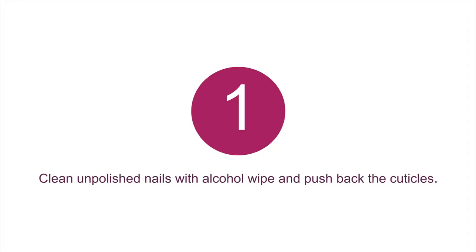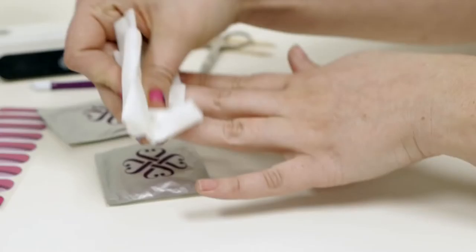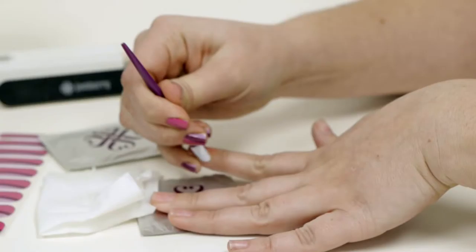We begin the process by prepping your natural nail. First, clean your unpolished nails with an alcohol wipe and push back the cuticles using an orange stick or a rubber cuticle pusher.